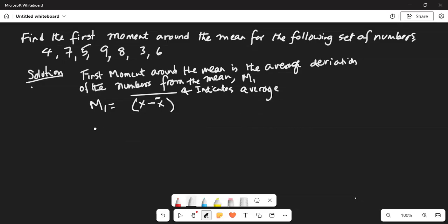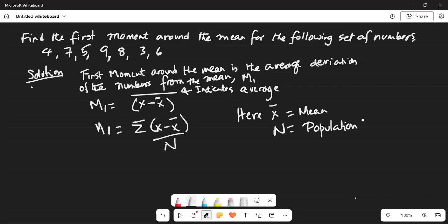So basically M1, to get average, we have to sum all the deviations from the mean and divide by N. Here, x-bar is the mean. N is the population size. First we need to find x-bar.